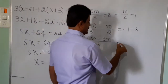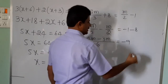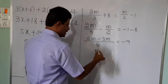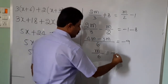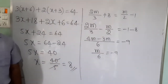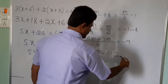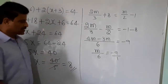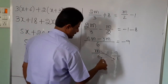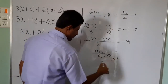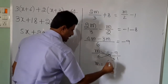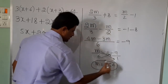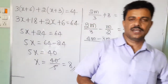So 4m minus 3m equals m, giving m by 6 equals minus 1 minus 8 equals minus 9. So m by 6 equals minus 9. Since the denominator on the right is considered 1, use cross multiplication: m into 1 equals m, and 6 into 9 equals 54. Therefore m equals minus 54.